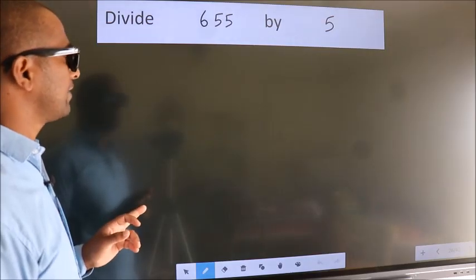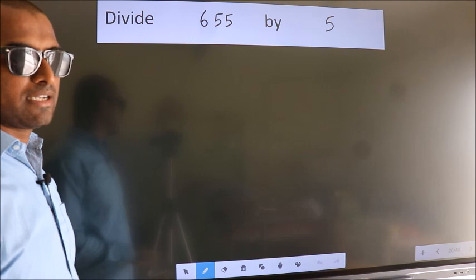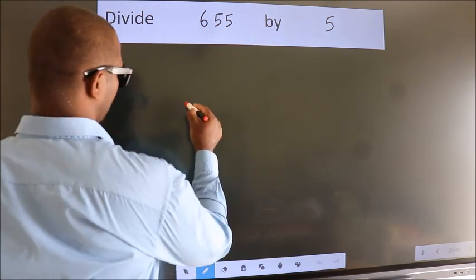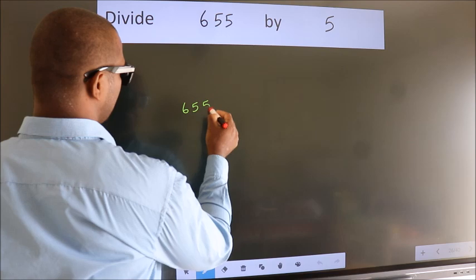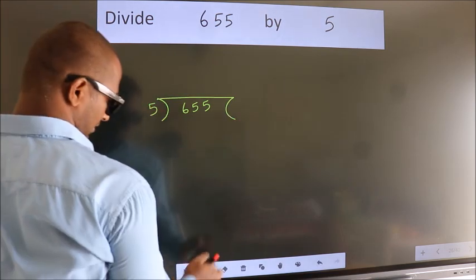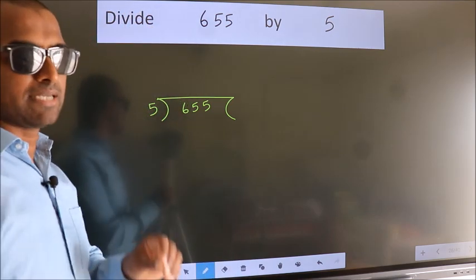Divide 655 by 5. To do this division, we should frame it in this way: 655 here, 5 here.